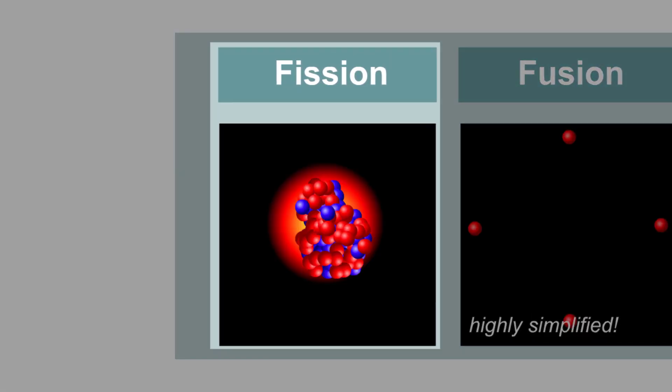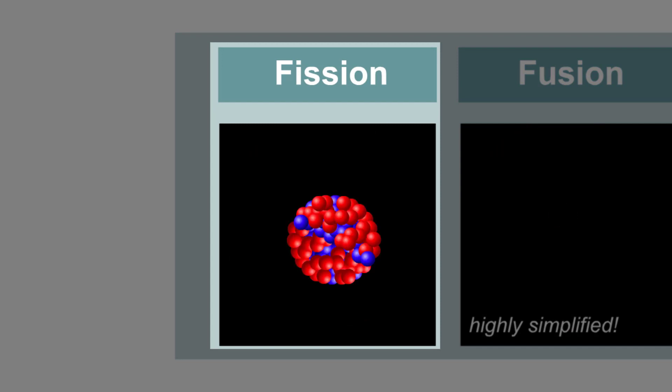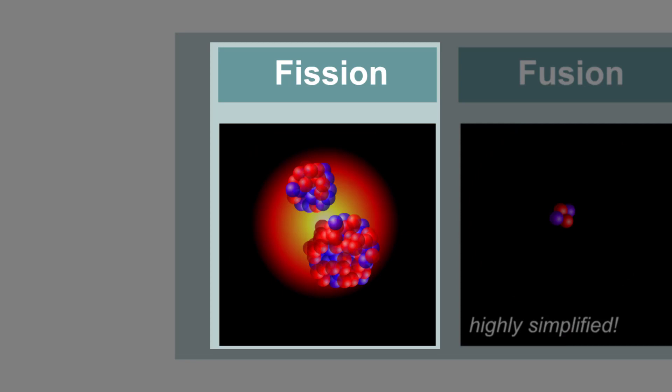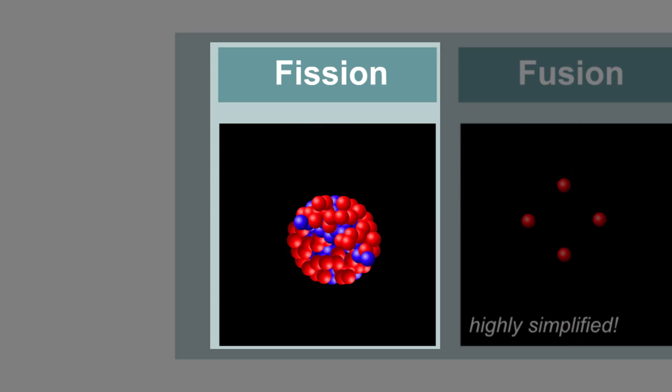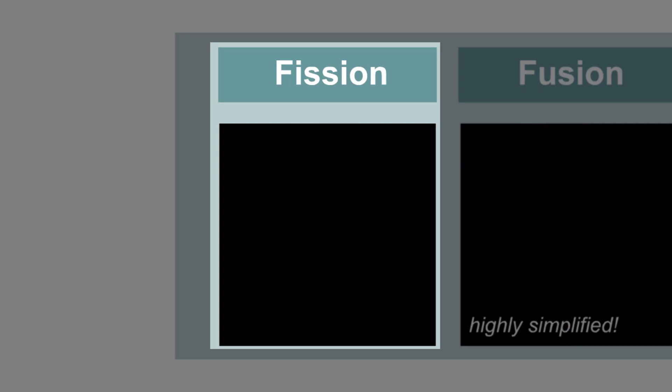Fission is all about splitting a big nucleus, like uranium, into smaller ones. This isn't too difficult, since a uranium nucleus is so big that it's on the verge of breaking apart anyway.